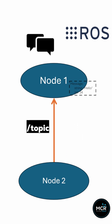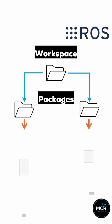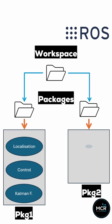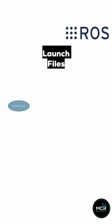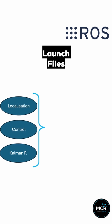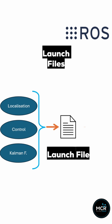Building with ROS is organized in something called a workspace. It's like a big folder for all your robot projects, containing different organized nodes into packages. And to get everything running smoothly, we use launch files. These are super handy scripts that let you start up multiple ROS nodes and their configurations simultaneously. It's like hitting one button to bring your robot to life.